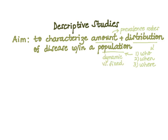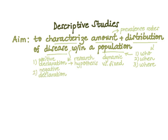The 'who' component specifically focuses on the type of population involved — dynamic versus fixed, or open versus closed. There are three types of epidemiologic hypotheses these studies aim to answer: a positive declaration or research hypothesis, a negative declaration or null hypothesis, and an implicit question to study an association between variables.